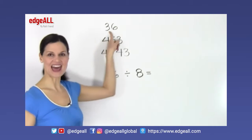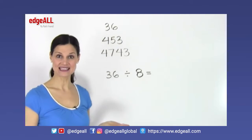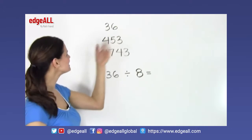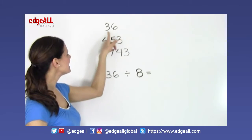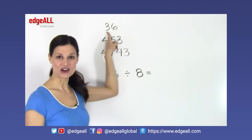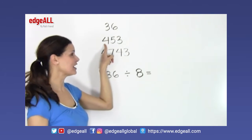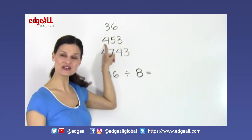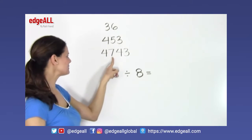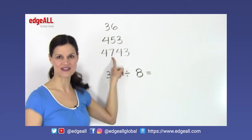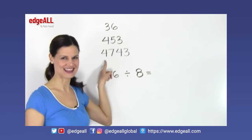So let's take a look at 36. The highest place value in the tens place is the 10 here, the 3 in the tens place. The highest place value for 453 is the hundreds place, and the highest place value for 4743 is the thousands place.